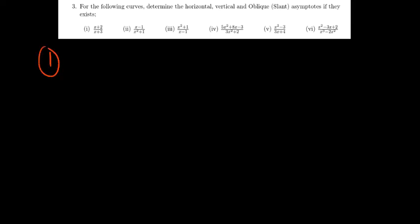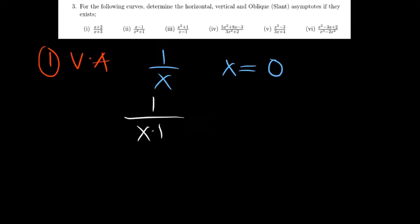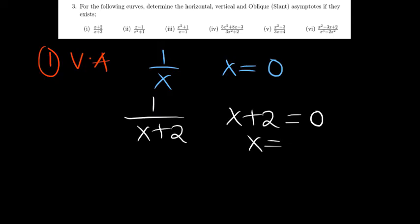So for the vertical asymptote — simple and straightforward — these ones occur when the denominator is equal to 0. In this case, 1 over x when x is 0. If you're going to have 1 over x plus 2, or whatever denominator you're going to have, whenever the denominator is equal to 0, that is going to be the vertical asymptote. So vertical asymptotes occur when the denominator is equal to 0.